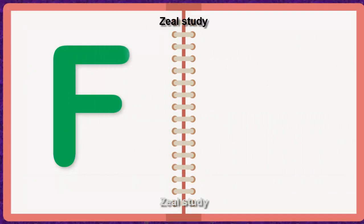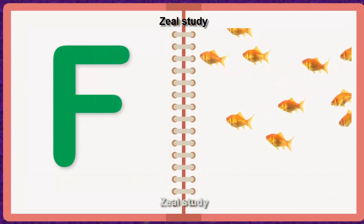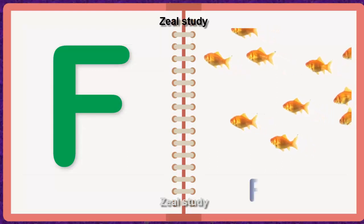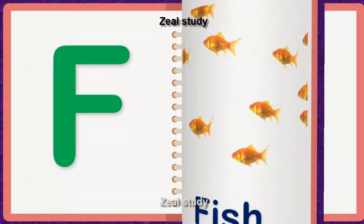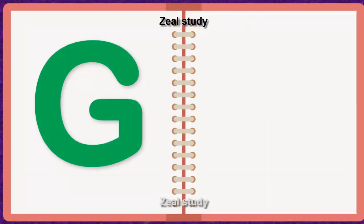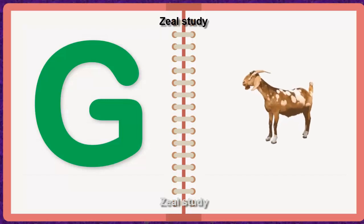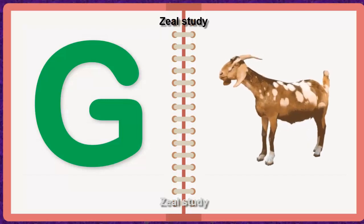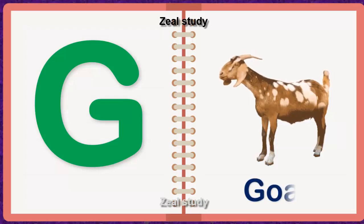F for Fish. F, I, S, H. Fish. G for Goat. G, O, A, T. Goat.